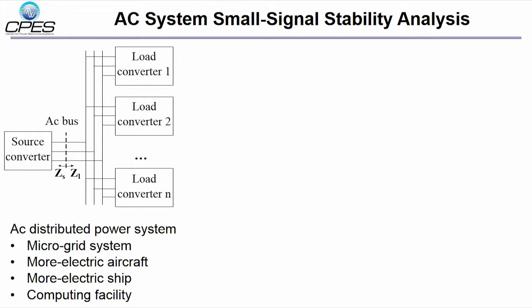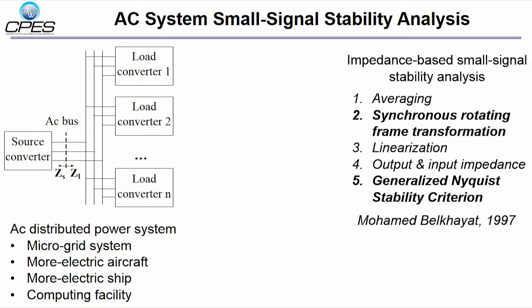AC distributed power systems also have a lot of applications. The impedance-based stability analysis for AC systems was proposed by Dr. Belkhayat in 1997. The procedure is similar to the one of DC systems, except two different steps are needed.